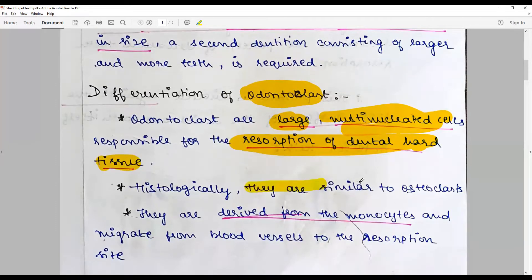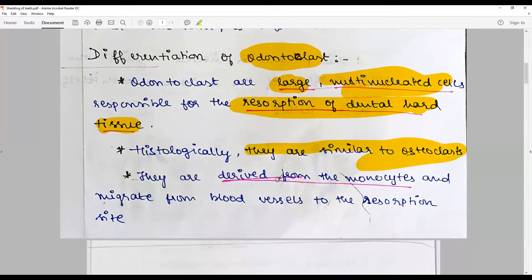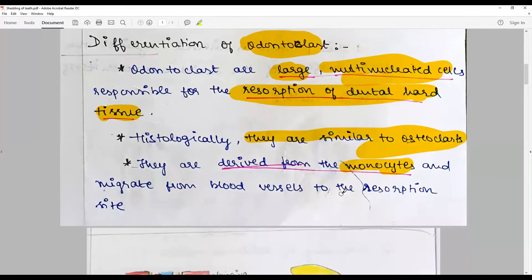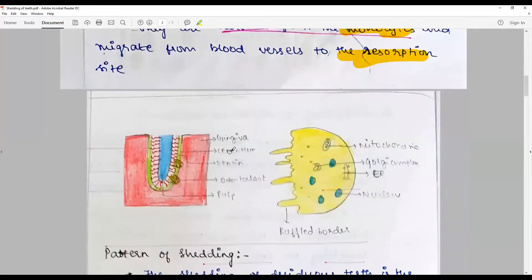Histologically and functionally, they are very much similar to osteoclasts. They are, like osteoclasts, derived from monocytes and migrate from the blood vessels to the resorption site.